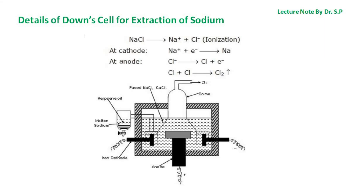A bell-like hood is submerged over the anode. When electric current is passed through the molten mixture of sodium chloride and calcium chloride, sodium chloride decomposes into sodium cation Na⁺ and chloride Cl⁻ ion. Sodium cations migrate towards the cathode while chloride ions migrate towards the anode. The molten sodium gets collected in the cathode compartment, rises to the top, and is tapped off by a pipe. Chlorine is collected at the anode.